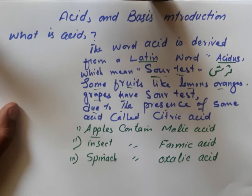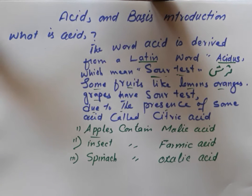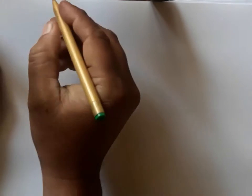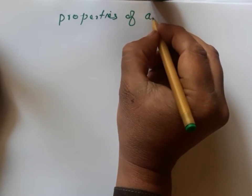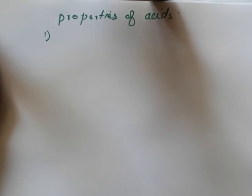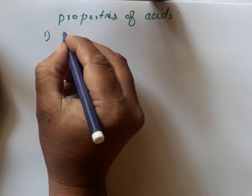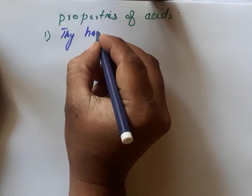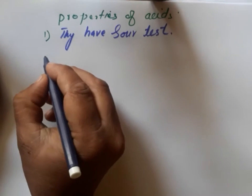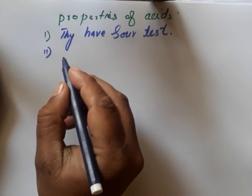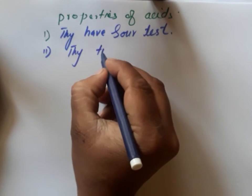Now let's look at the properties of acids. Property number one: acids have a sour taste.